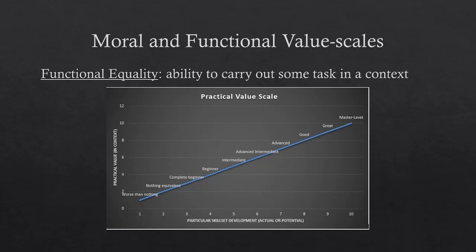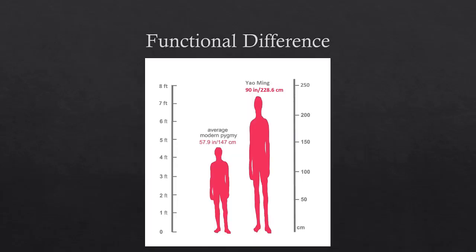Any bloodhound is inherently better than any human at jobs that require tracking by scent, and we don't mean to say that the hound ought to have more rights than a human being. Moral equality holds across all contexts. Functional equality means that I am better than you in some ways, equal in others, and worse in a third category, and even this relation can change as a function of time. While moral equality does not depend on accidental features like height, functional equality might. If I need someone to crawl through a tiny AC duct, Steve the Pygmy is functionally better than Yao Ming, and if I need to read something from the top shelf without a ladder, Yao Ming is better than Steve.